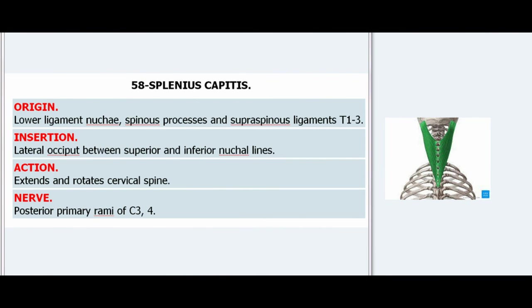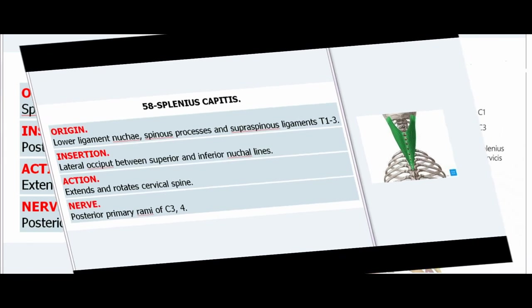58. Splenius Capitis. Origin: Lower ligamentum nuchae, spinous processes and supraspinous ligaments T1–3. Insertion: Lateral occiput between superior and inferior nuchal lines. Action: Extends and rotates cervical spine. Nerve: Posterior primary rami of C3–4.